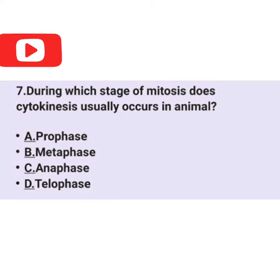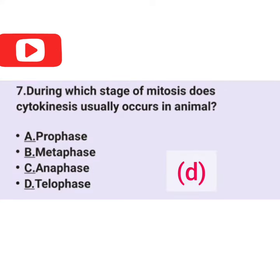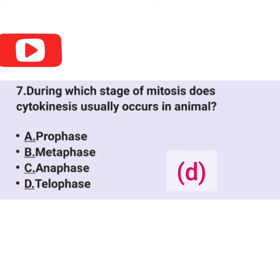Question 7. During which stage of mitosis does cytokinesis usually occur in animals? That is D: Telophase.